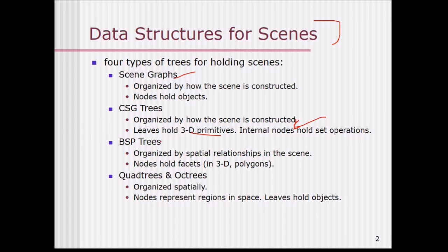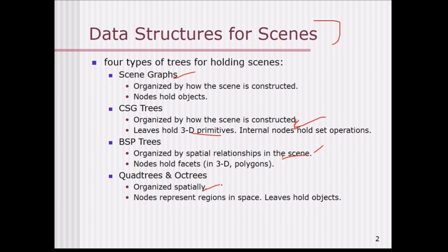BSP trees are organized by spatial relationships in the scene. They are partition trees, and their nodes hold facets — for example, polygons like triangles and quadrilaterals in 3D. Quad trees and oct trees are also organized spatially, where nodes represent regions in space and leaves hold the objects.